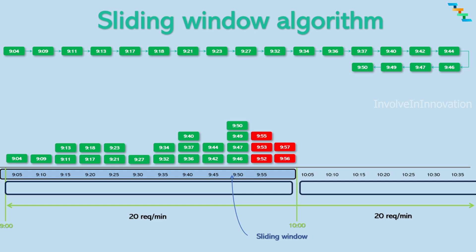The incoming request comes at timestamp 9 minutes and 52 seconds. The linked list head timestamp is 9 minutes and 04 seconds, which is within the period range. Here, the linked list size is already at 20, which is the sliding window limit. So the new request is rejected with response code 429.